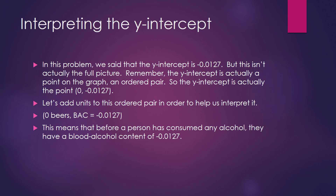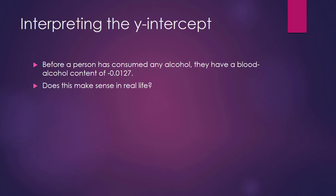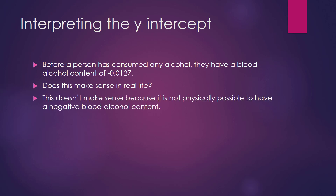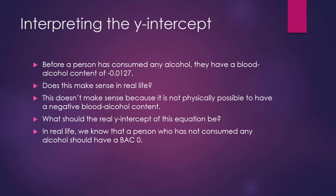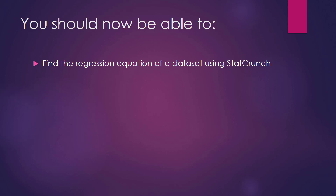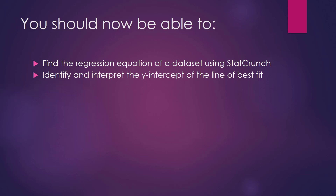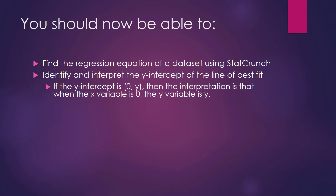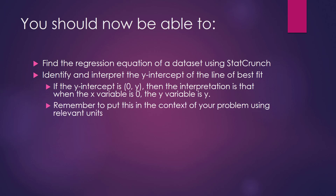Let's pause and think about what that means. Does this make sense in real life? It doesn't, because it's not physically possible to have a negative blood alcohol content. What should the real y-intercept of this equation be so that it makes sense in real life? Pause this video, write down your answer, and then unpause it. In real life, we know that a person who has not consumed any alcohol should have a blood alcohol content of 0. Again, it's not physically possible to have a negative blood alcohol content.